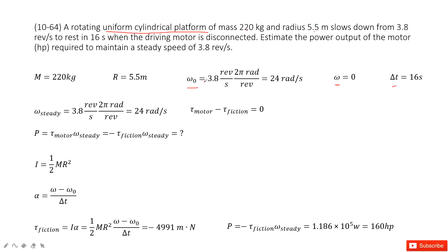There, we need to convert unit revolution per second to unit radians per second. And there, it tells us this driving motor is disconnected. So that means at this time, no power acts on this motor. Do you agree?